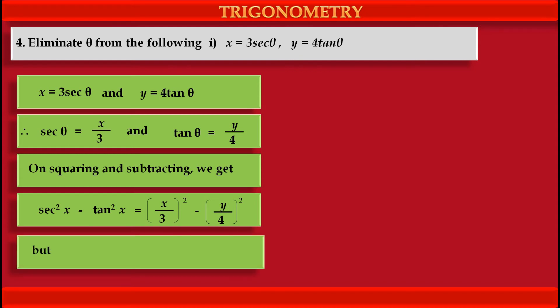But we know one trigonometric identity, so sec squared theta minus tan squared theta is equal to 1.